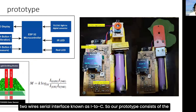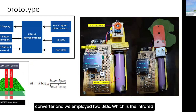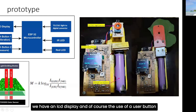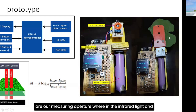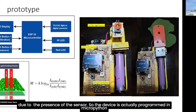Our prototype consists of the following main components: an ESP32 microcontroller, a TSL2561 light-to-digital converter sensor, two LEDs — an infrared LED and a red LED — an LCD display for visual feedback, and a user button. This is a picture of the bare-bones prototype featuring the TSL2561 light sensor, hermetically sealed, with a measuring aperture where the infrared and red LEDs transmit light through a leaf to be detected at the bottom by the sensor.